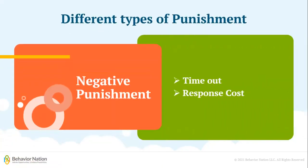Next, let's talk about negative punishment, where a desirable stimulus is removed. This could be a time out or a response cost. A time out is a period of time where there is no reinforcement for the child. A response cost is when the child loses something valuable — for example, with a token economy, if your child engages in a challenging behavior, you could remove a token from their token board.